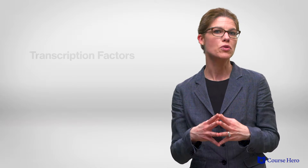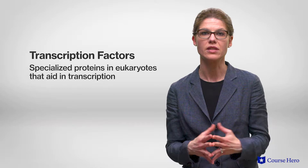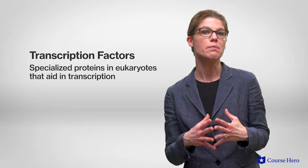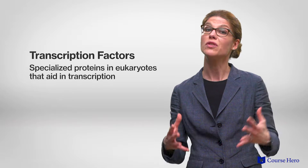In eukaryotes, a collection of proteins called transcription factors mediate the binding of RNA polymerase to the promoter. After the RNA polymerase is bound to a promoter site, it can begin the second step of protein synthesis: elongation.